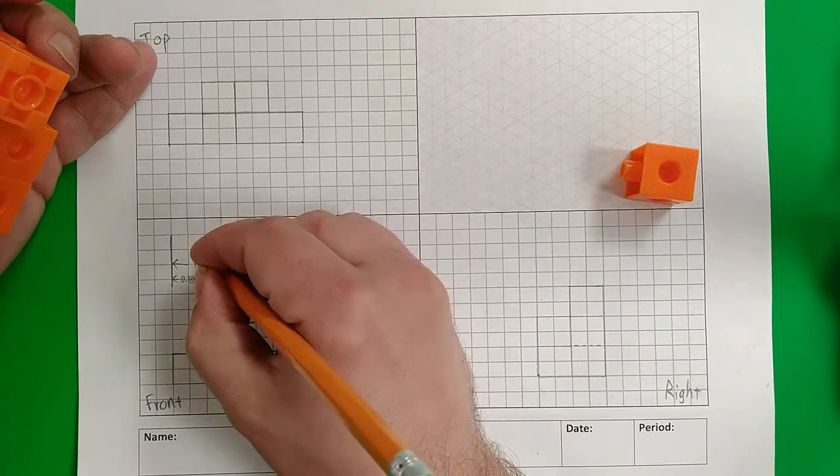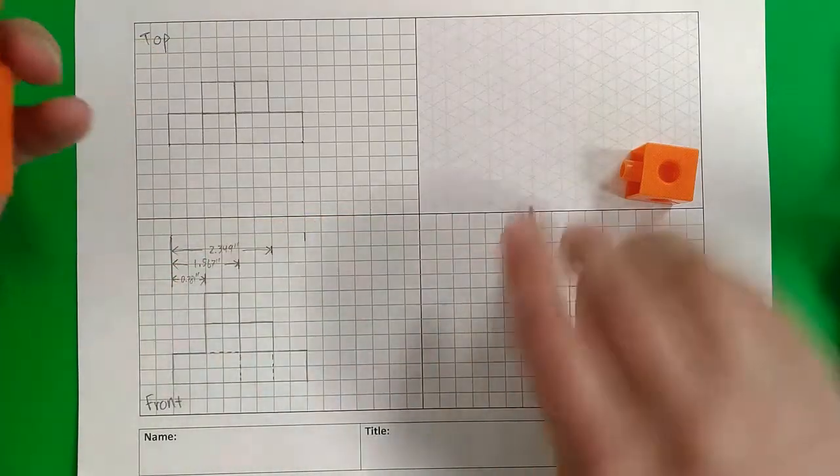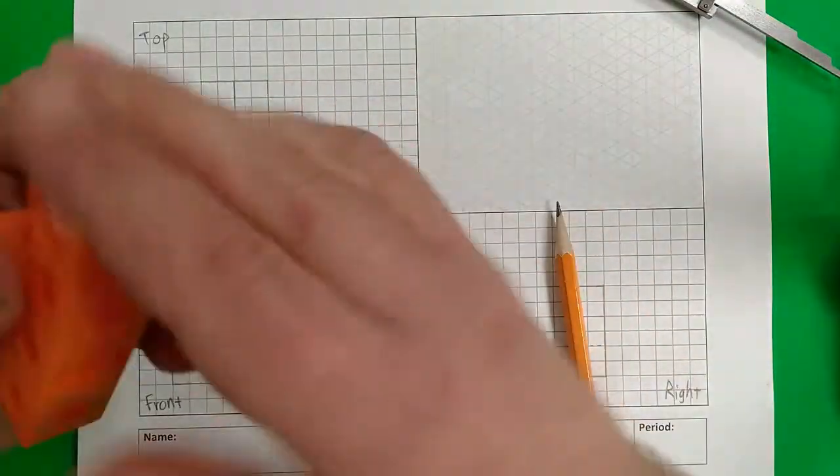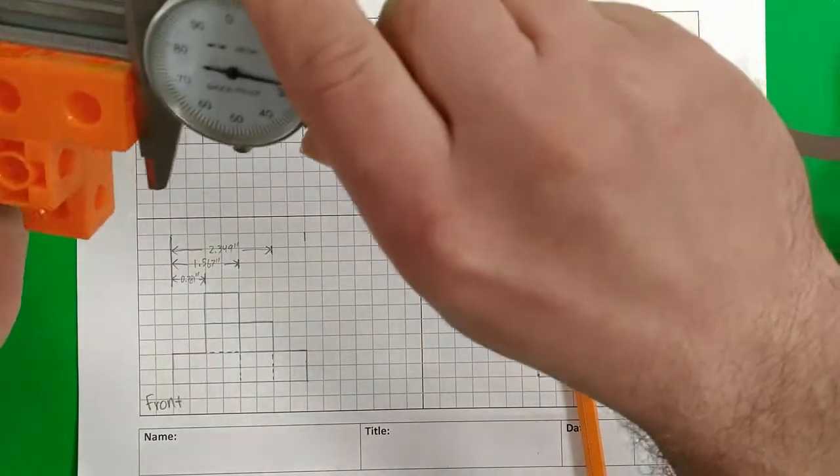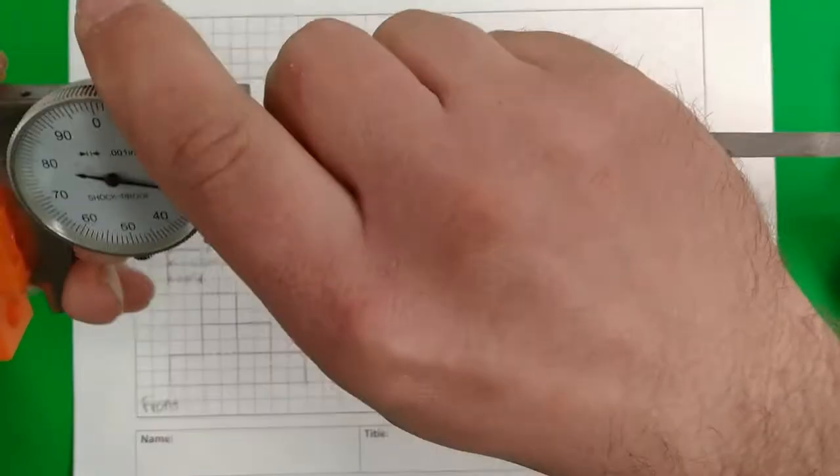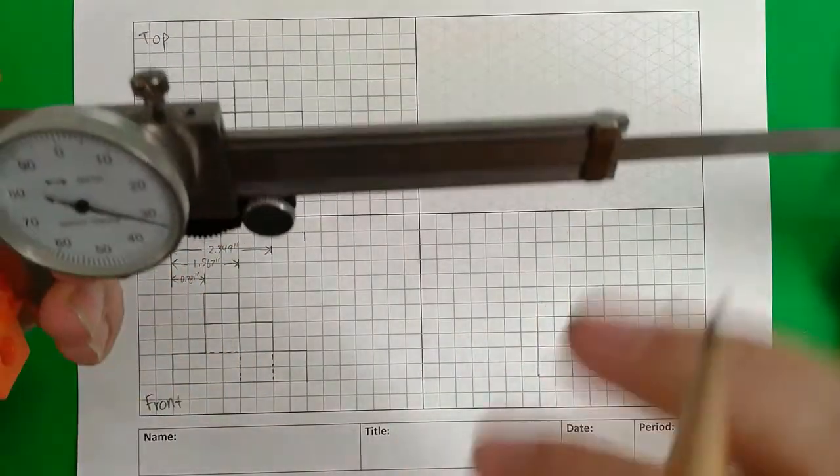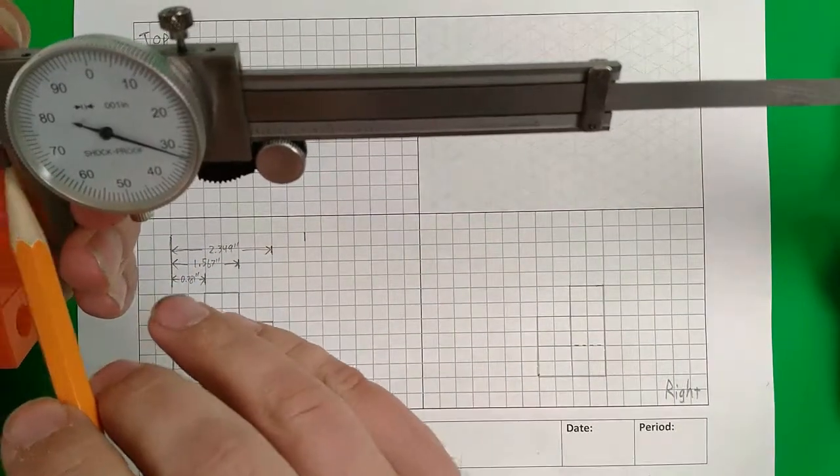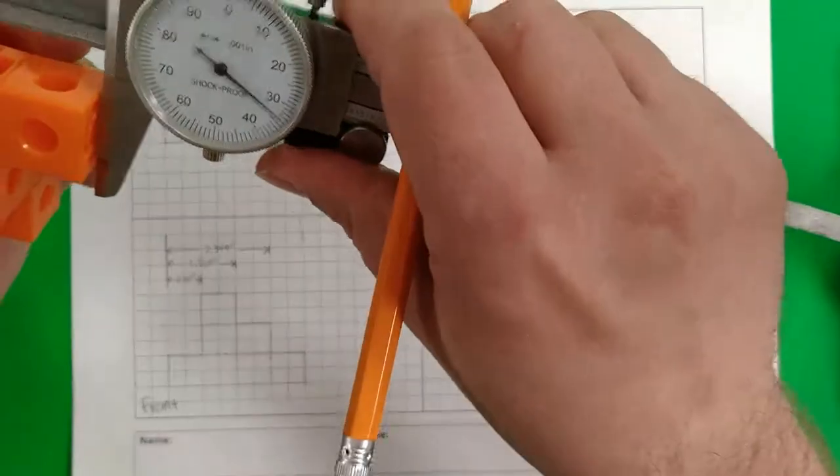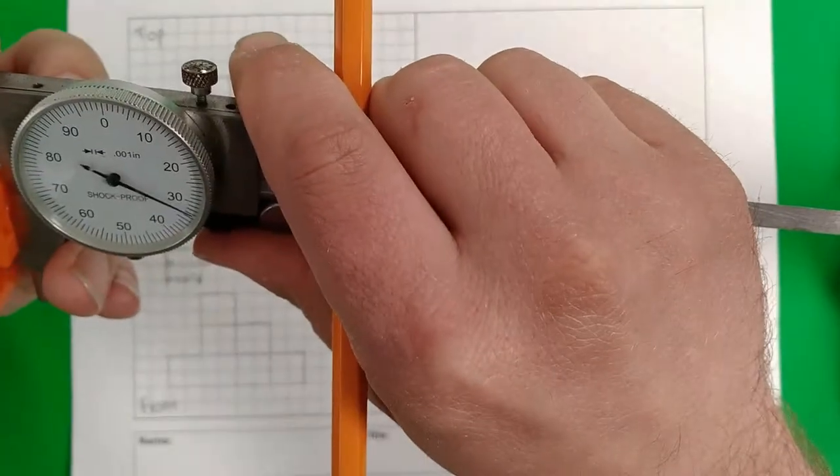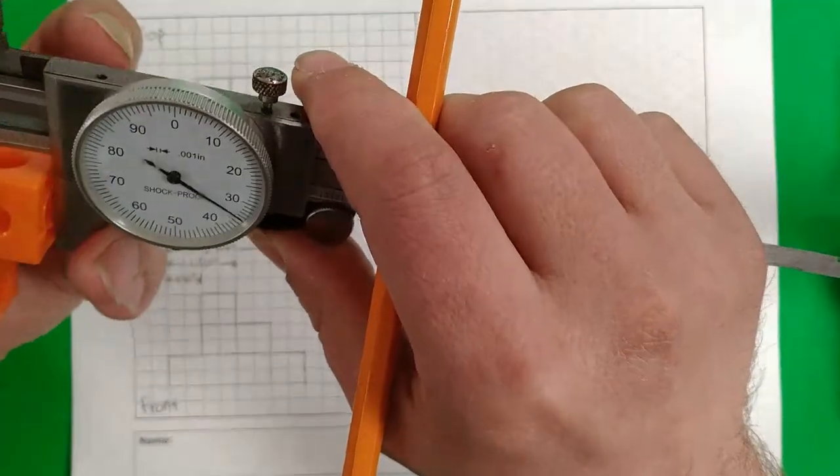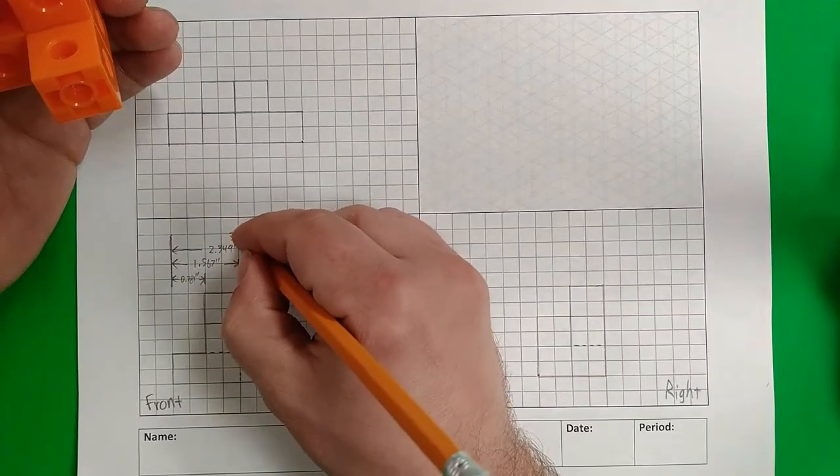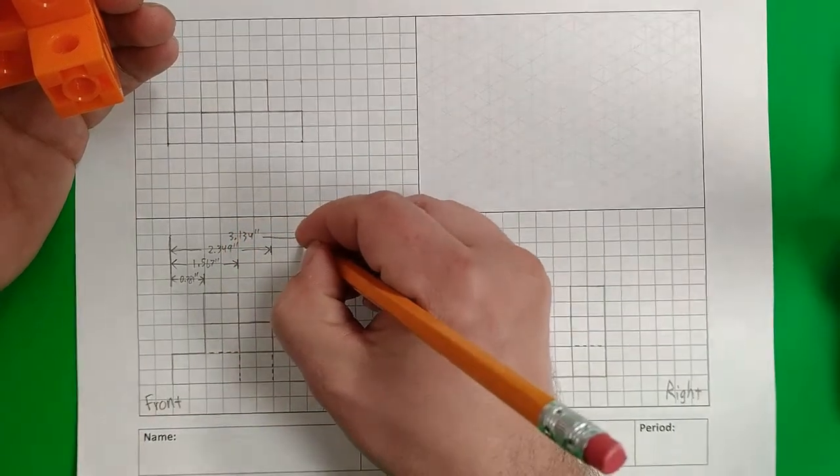And for our overall shape. We already looked at it with a ruler, but let's go ahead and get a dial caliper measurement on this one. And we see that we have 3.13. Let's say 3.134. 3.134.